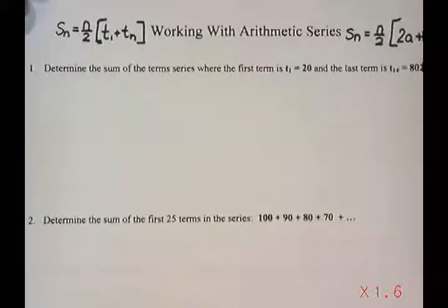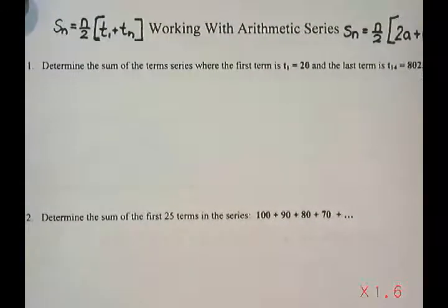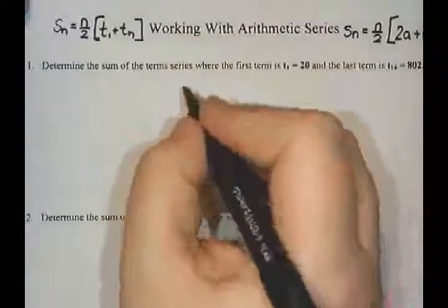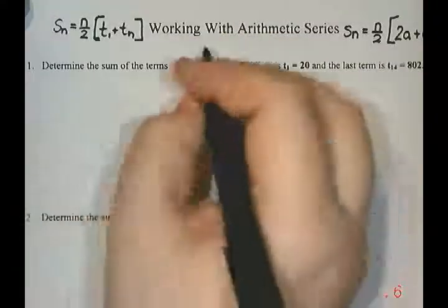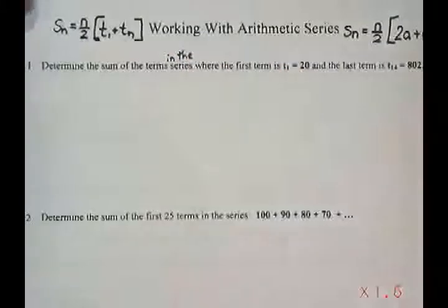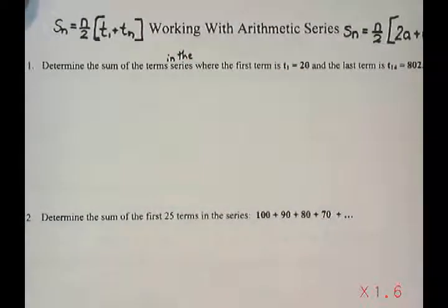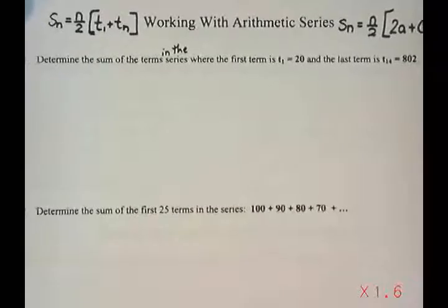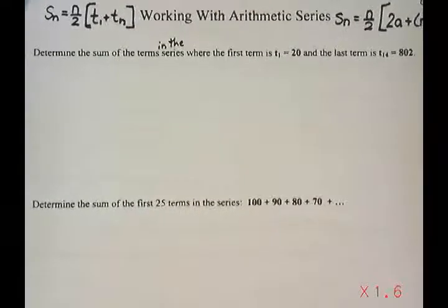So the first question here says determine the sum of the terms in the series where the first term is t₁ equals 20 and the last term is t₁₄ equals 802.